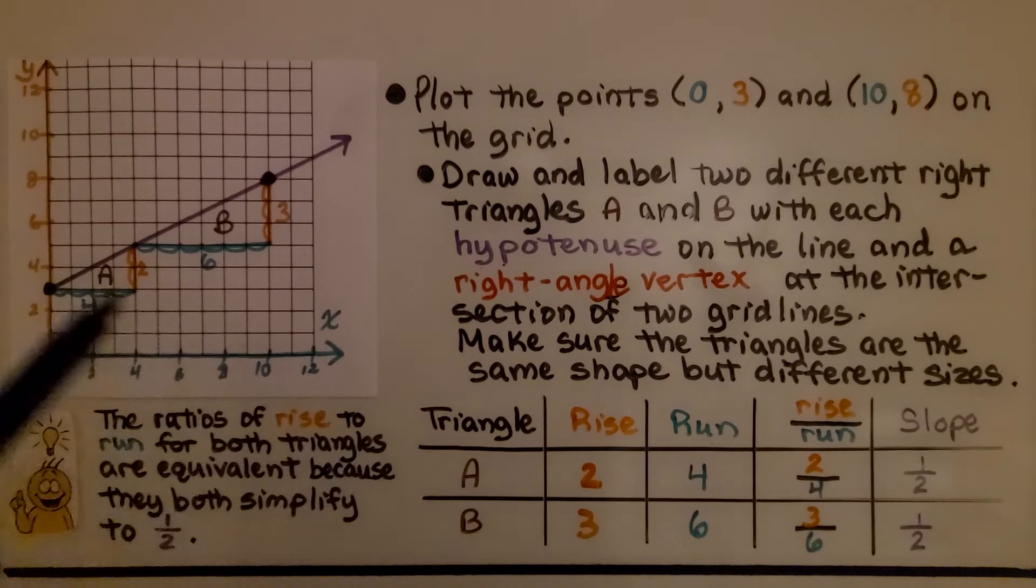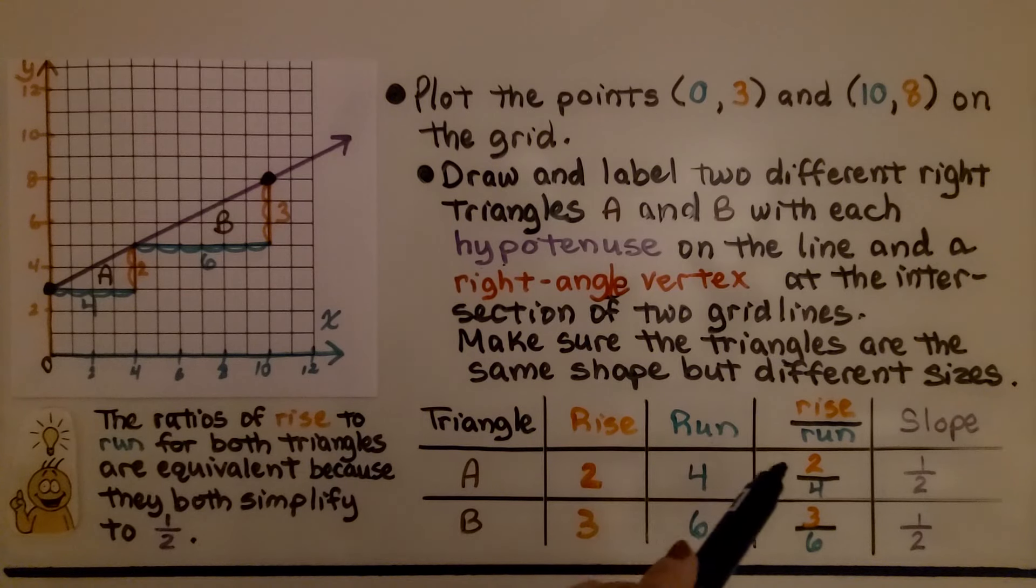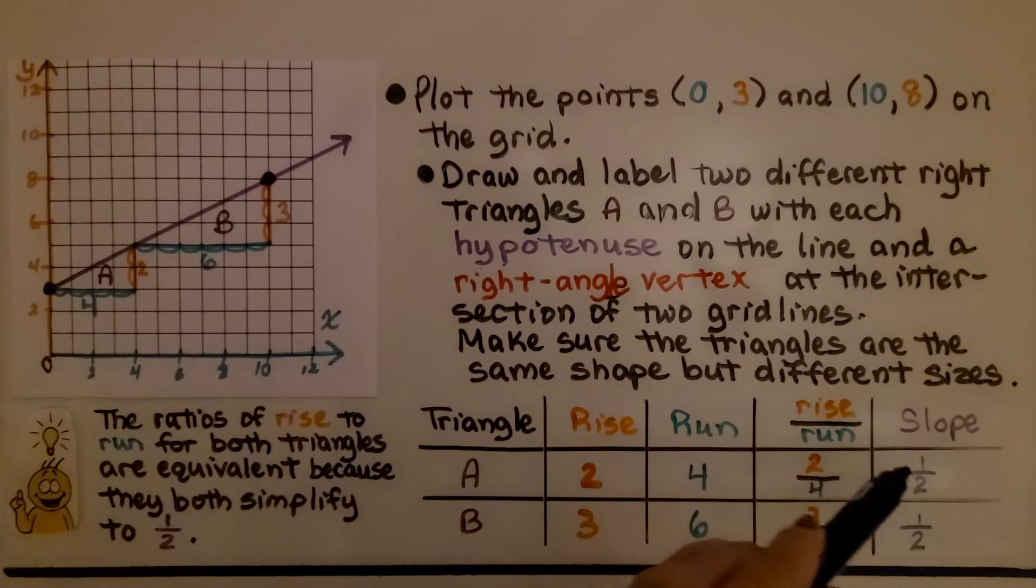So for triangle A, we have a rise of 2, 1, 2, and a run of 1, 2, 3, 4. And our rise over run is 2 fourths. We simplify it. Our slope is 1 half.